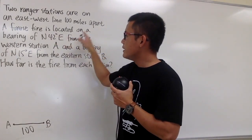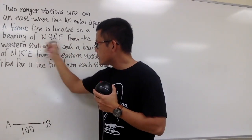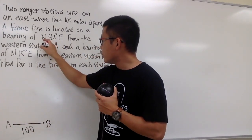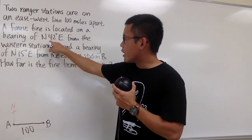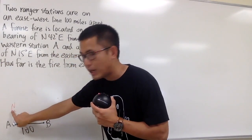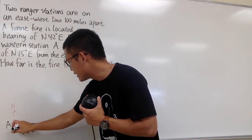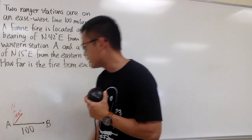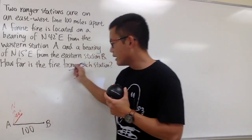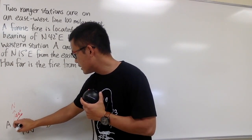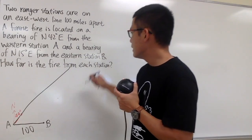The fire is on a bearing of north 42 degrees east from station A. So at A, I look up to the north direction, then turn 42 degrees toward the east — that's to the right. I draw a line in that direction and extend it, though I don't yet know how far the fire is.